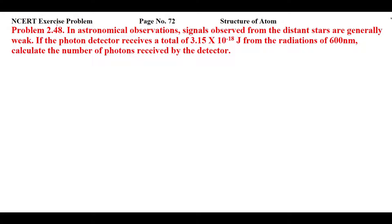This is NCERT exercise problem 2.48 from page number 72 of Structure of Atom. In astronomical observations, signals observed from distant stars are generally weak. If the photon detector receives a total of 3.15 × 10⁻¹⁸ joule from radiation of 600 nanometer, calculate the number of photons received by the detector. For this question, we'll apply the unitary method.